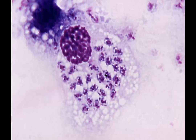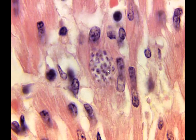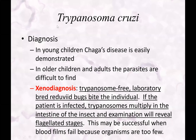This shows monocytic engulfed cells — more of the amastigote appearance. This is in cardiac tissue — amastigotes that have dwelled into the tissue and are starting to break it down.